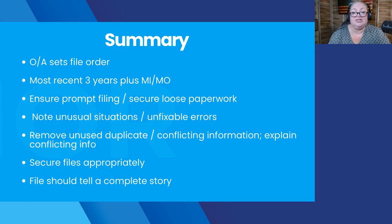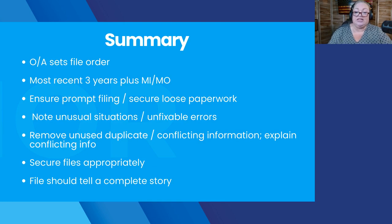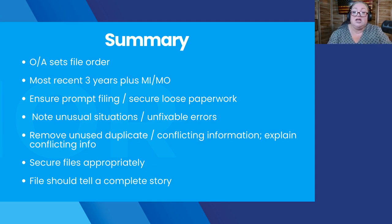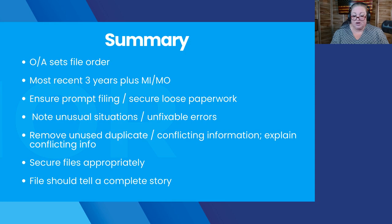In summary: the owner-agent sets the order, and you want to make sure the file order is consistent for all your files. You want to have the most recent three years plus the move-in and the move-out if it's a move-out file. With move-outs, make sure you have your final account statement, security deposit letter, and whatever final paperwork you hand out to tenants. Ensure that you're filing paperwork promptly and securing any loose paperwork, and make sure you're noting any unusual situations or unfixable errors.